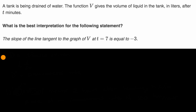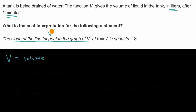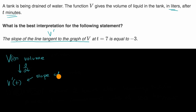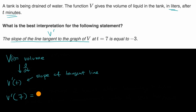All right, let's remind ourselves what's going on. V gives us the volume as a function of time — volume is in liters and time is in minutes. If they're talking about the slope of the tangent line to the graph of v, that's just v prime. Taking the derivative with respect to time gives you v prime, and these are all functions of t. They say at t equals seven it's equal to negative three, meaning v prime of seven — the rate of change of volume with respect to time — equals negative three.